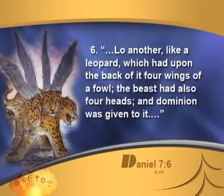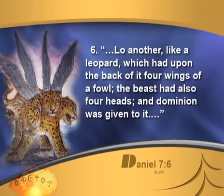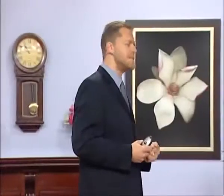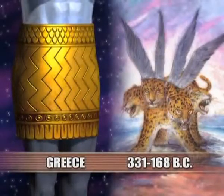Daniel 7 verse 6 describes another beast — a leopard. Recall that wings represent speed, momentum, and area coverage to the edge of the earth. This beast looks like a leopard with four wings, meaning it would spread at ultimate speed. It represented Greece — the same period as the hips of the statue — which was King Alexander the Great. The four heads point to Daniel 8:22, which says four kingdoms shall stand up out of the nation.